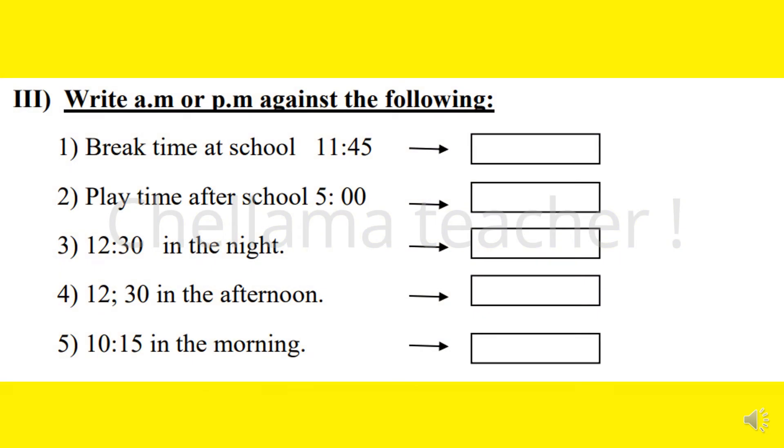Question 3: Write AM or PM against the following. Dear children, here five timings are given. We have to find whether it is AM or PM. We all know that midnight 12 to the next day 12 noon timings are denoted by ante-meridian, AM. Similarly, from 12 noon to midnight 12 is denoted as post-meridian, PM.